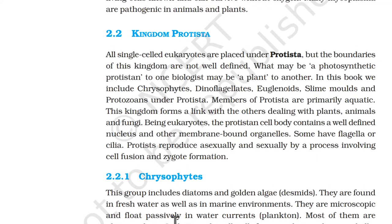2.2 Kingdom Protista. All single-celled eukaryotes are placed under Protista, but the boundaries of this kingdom are not well-defined. In this book, we include chrysophytes, dinoflagellates, euglenoids, slime molds, and protozoans under Protista. Members of Protista are primarily aquatic and this kingdom forms a link with kingdoms dealing with plants, animals, and fungi. Being eukaryotes, the protist cell body contains a well-defined nucleus and other membrane-bound organelles. Some have flagella or cilia. Protists reproduce asexually and sexually by processes involving cell fusion and zygote formation.